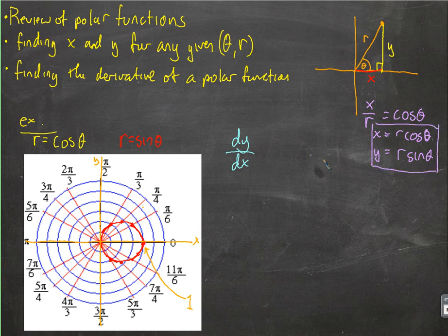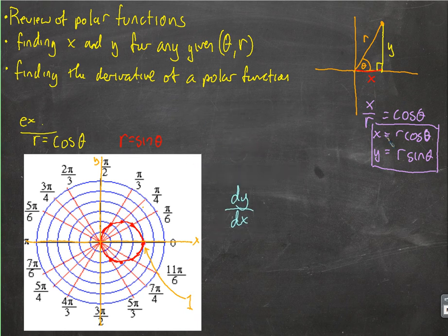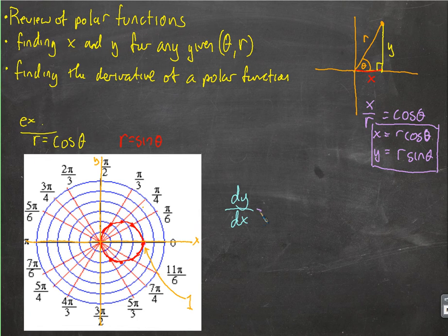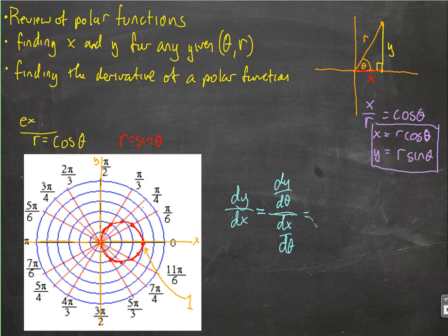Now we start to see, remember that the function, or the variable of the function, is theta. Give me theta, I can tell you what r is. Theta is what it all depends on, the independent variable. So now we can see, we can express x and y in terms of theta. We could rewrite r, plug that in here, and have that. So, what we can do to find dy over dx is very similar to the parametric where we take dy dt over dx dt. But now we take dy d theta over dx d theta. And you can think of multiply by the reciprocal of dx d theta, and you get dy over dx.